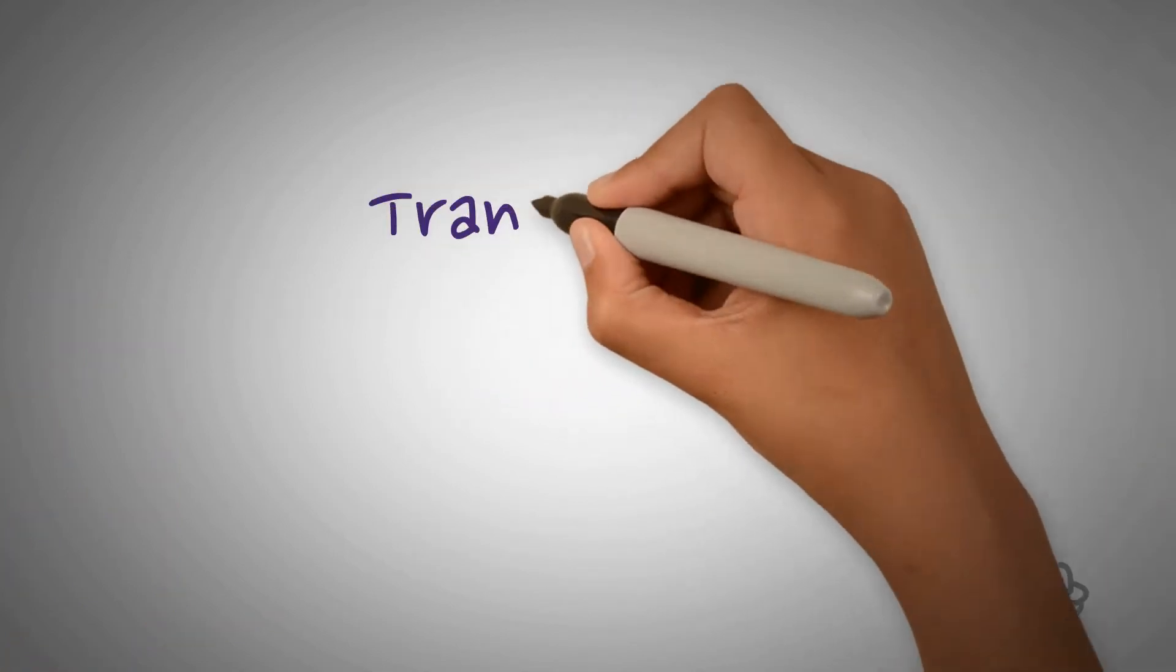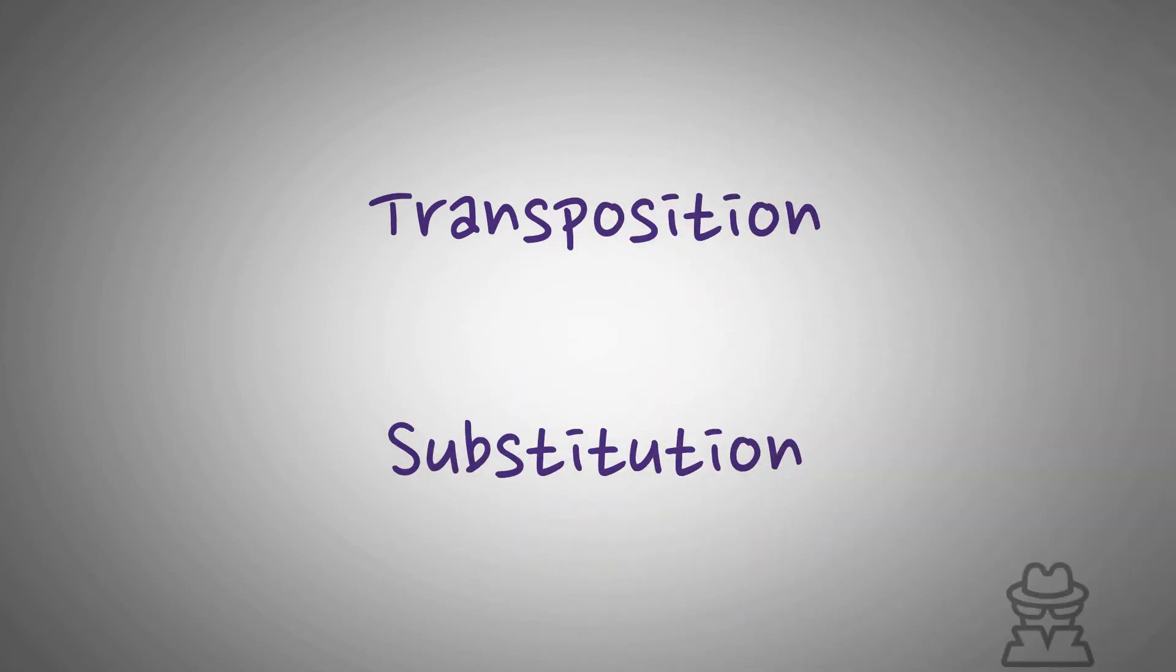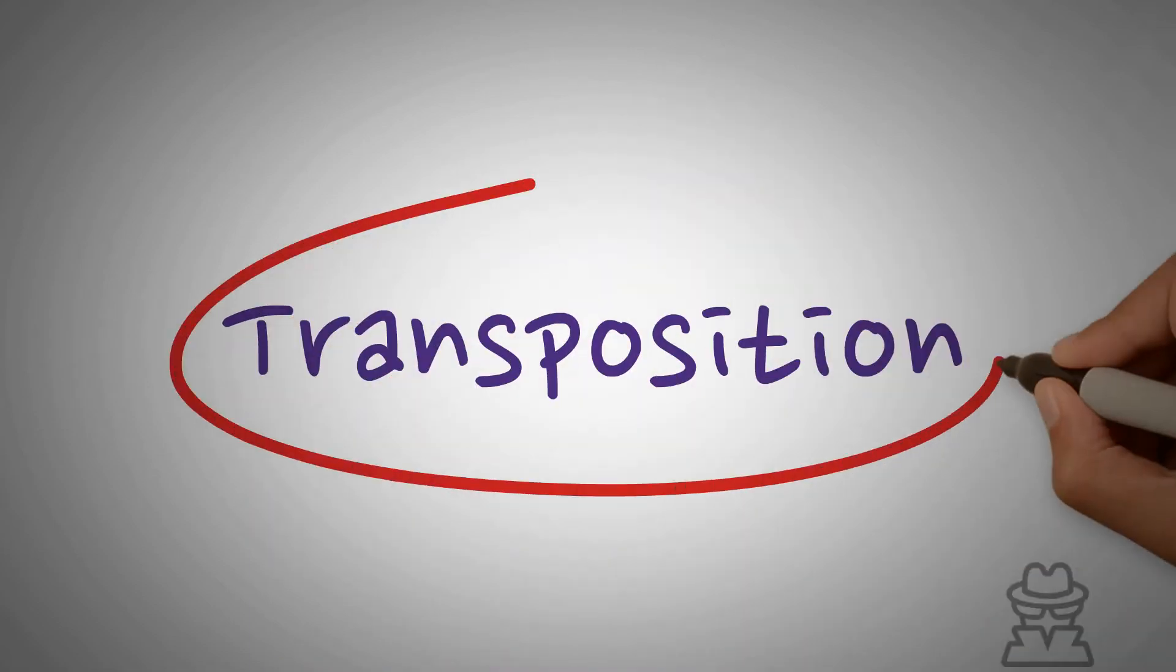Classical ciphers are typically grouped into two different categories: transposition ciphers and substitution ciphers. These first several videos will investigate different classes of transposition ciphers.